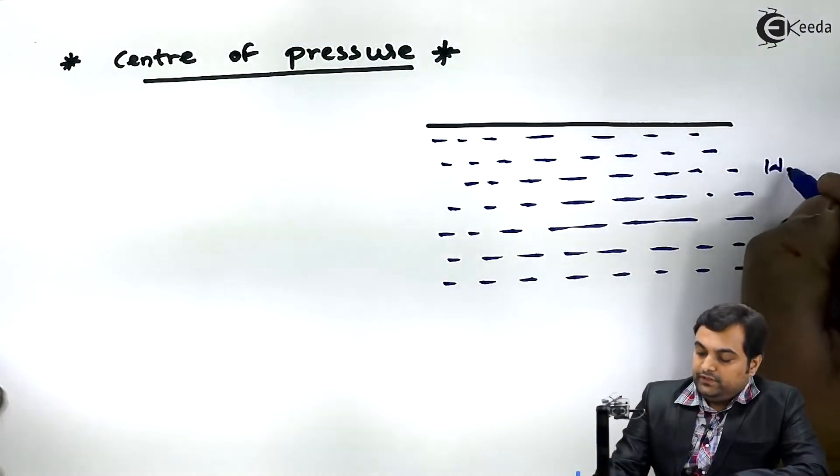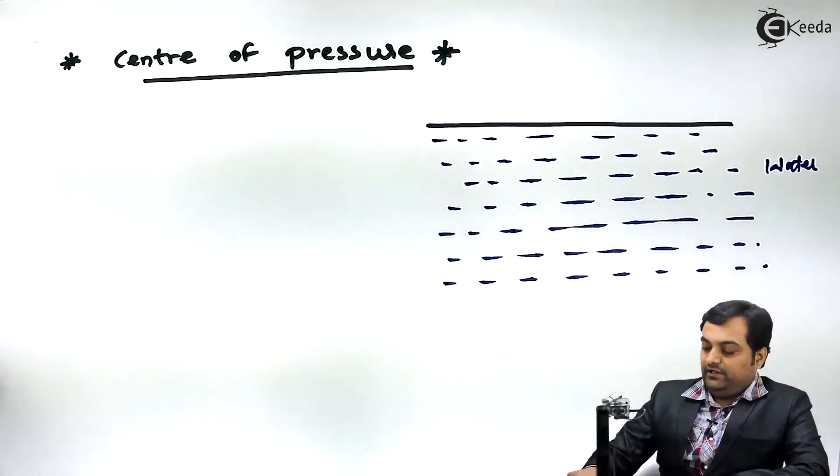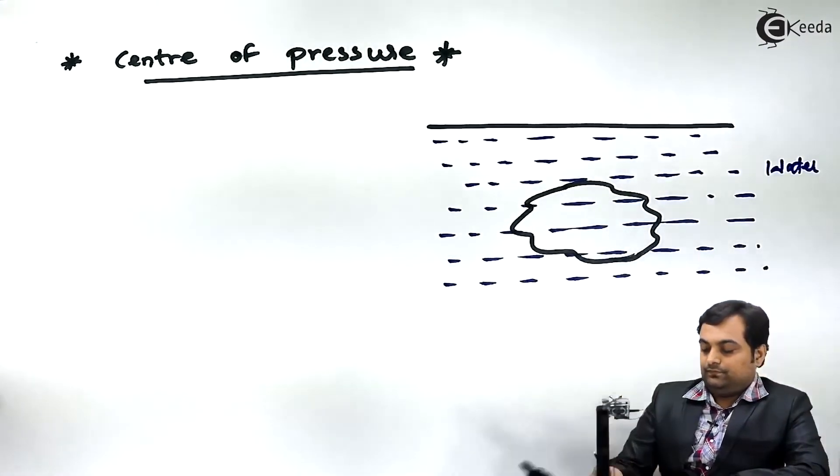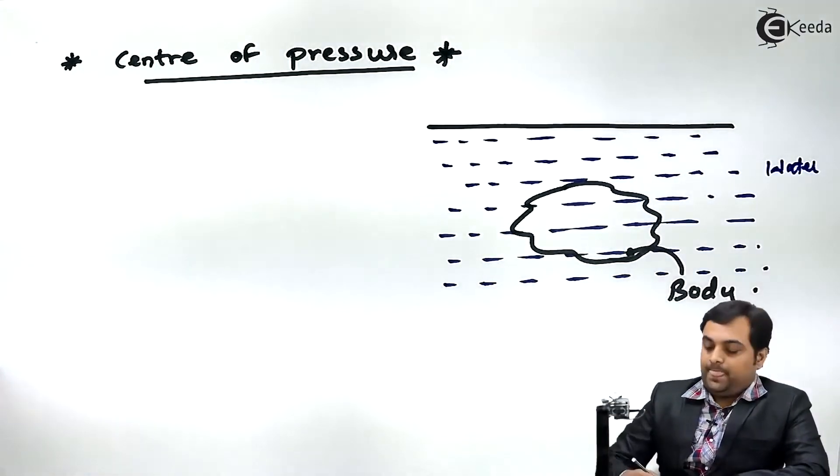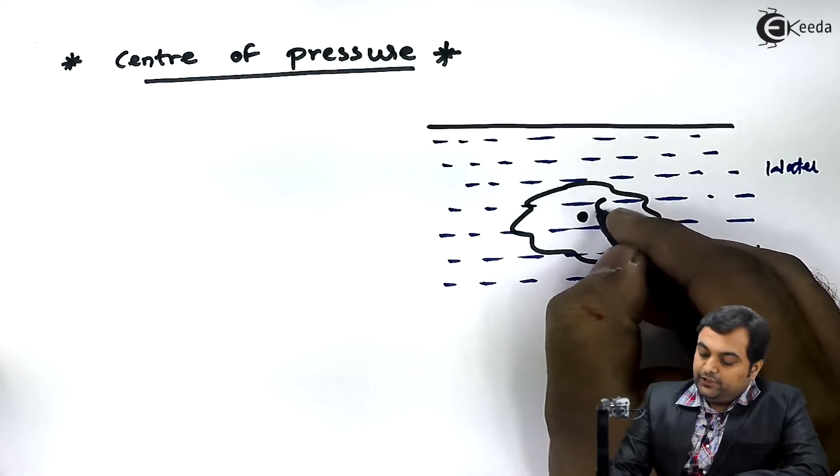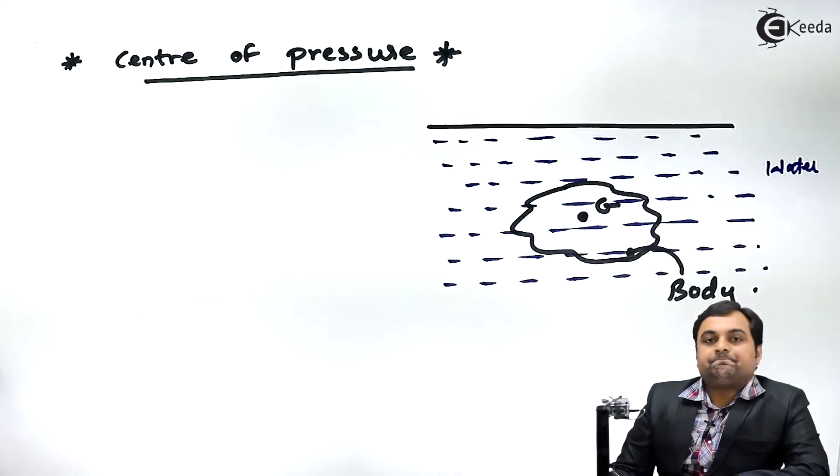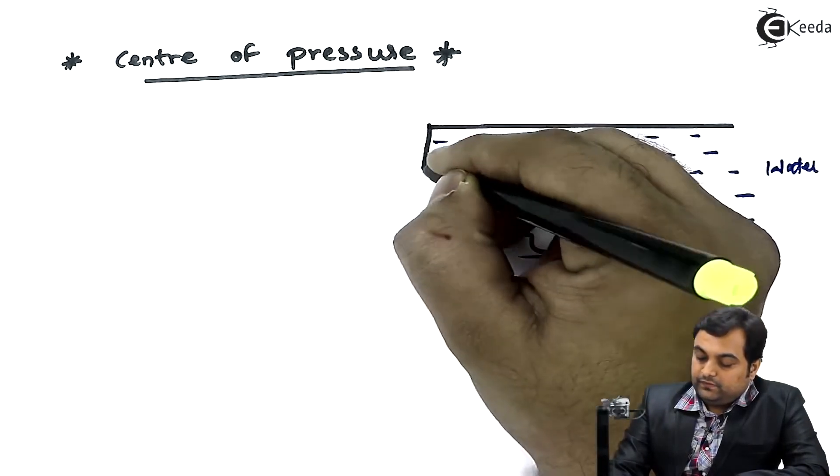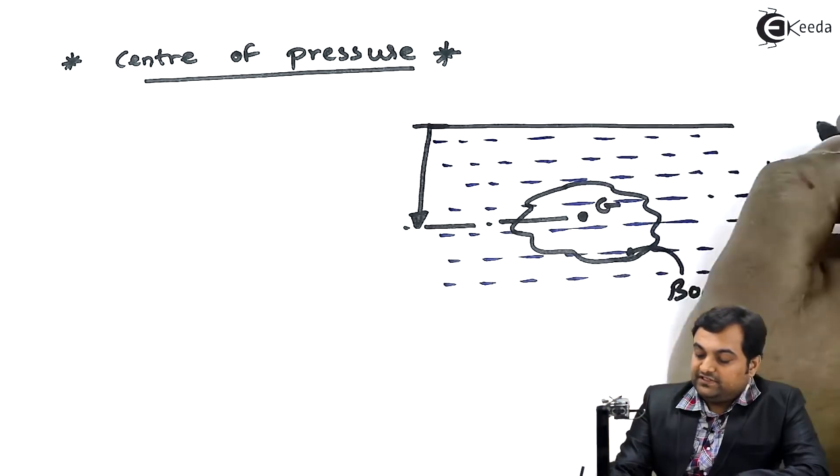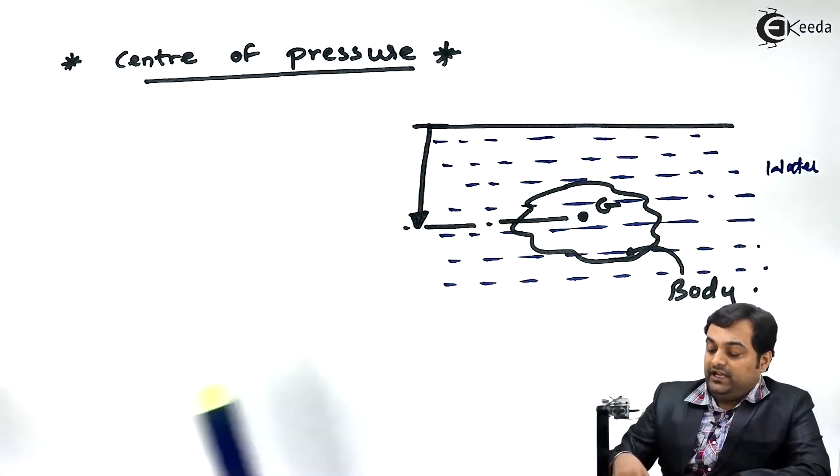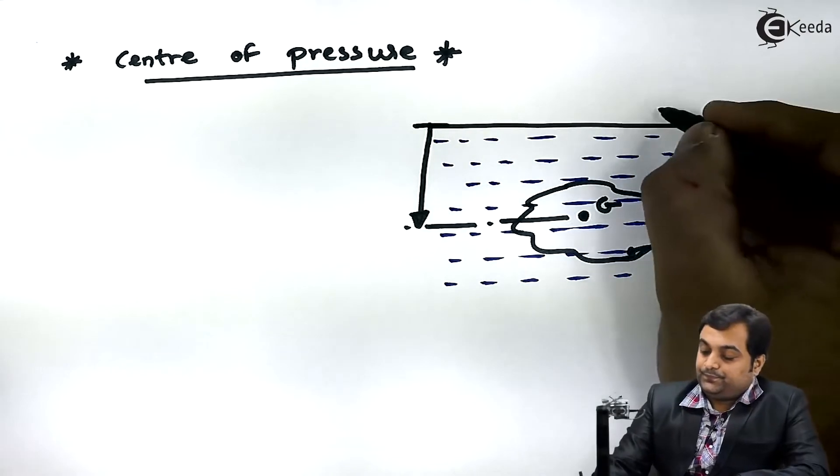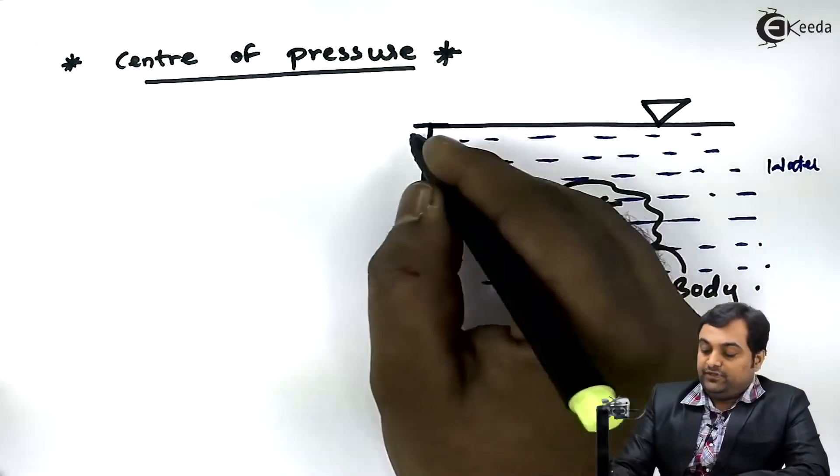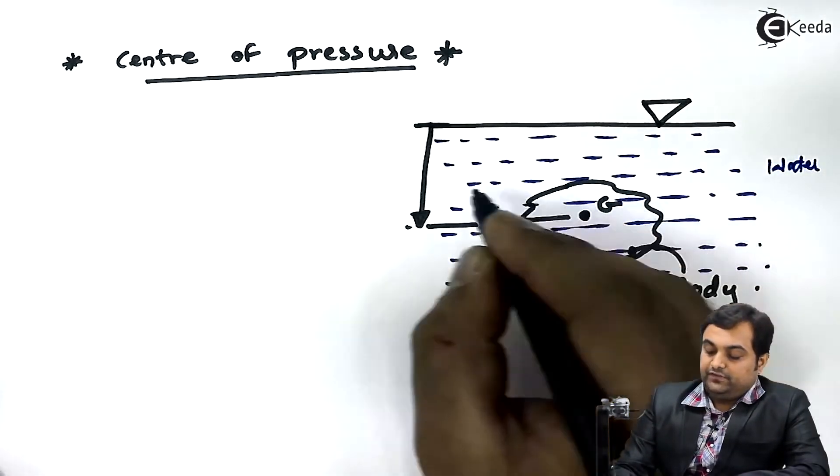Now in this water, if we immerse a body, the centroid of this body will be denoted by G. Its height from the free surface - the free surface of liquid is this and it would be exposed to atmosphere, I'll show the symbol here. The height from the free surface up to the centroid or center of gravity would be denoted by H bar.